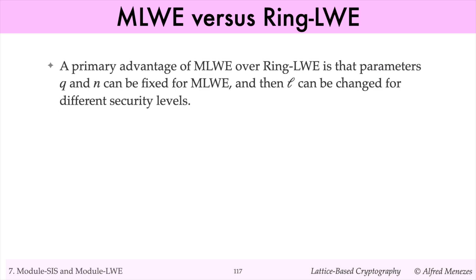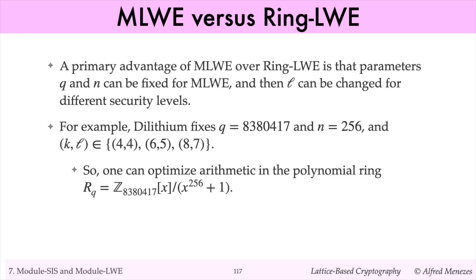As with module SIS, our primary advantage of module LWE over ring LWE is that the parameters Q and N can be fixed, and then the parameter L can be varied to achieve different security levels. For example, Dilithium fixes Q to be roughly 8 million and N to be 256, and the KL values are 4, 4, 6, 5, and 8, 7. So one can optimize arithmetic in the polynomial ring RQ. Since L is relatively small compared to N, the module LWE instances in Dilithium are closer to ring LWE than to LWE.